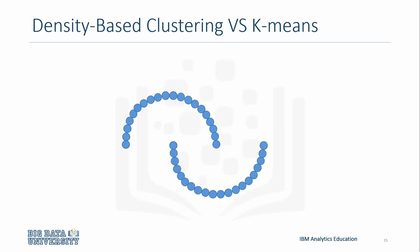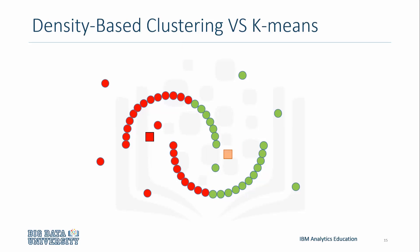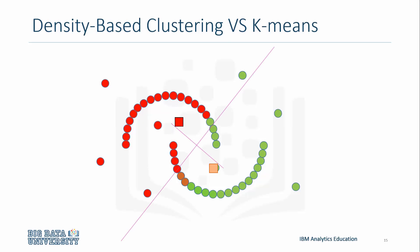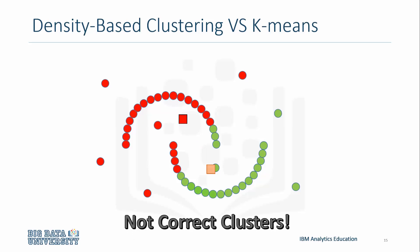Now let's look at the same half moon example using K-means, including the noise data points. Two random centroids start off and the collective points are assigned. Then each centroid is moved to its new location and the collective points are reassigned. This cycle repeats until no new points are assigned from centroid movement. Once K-means is complete, we can see that it did not correctly predict the half moon clusters, nor the noise. K-means has a huge disadvantage in that it considers the whole dataset and could not distinguish noise from cluster groupings. It might also identify clusters incorrectly due to its reliance on centroid placements.